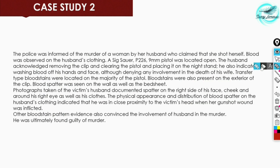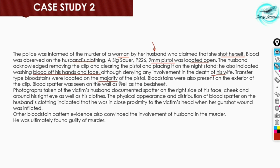In another case, police were informed of a murder of a woman whose husband claimed she had shot herself. Some blood stains were observed on the husband's clothing. A SIG Sauer P226 9mm pistol was found open. The husband acknowledged removing the clip, clearing the pistol, and placing it on the nightstand. He also admitted washing blood off his hands and face, while denying any involvement in his wife's death.